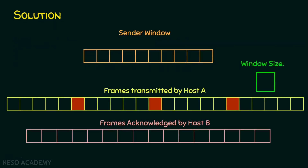I've predefined certain things: there is a sender window showing the window size, the frames transmitted by host A, and the frames acknowledged by host B. Every sixth frame is lost — so frames at position 6, 12, 18, etc. in the transmission sequence will be lost. Whatever is marked as acknowledged means that frame is acknowledged by the receiver, host B, and sender and receiver need not worry about those frames anymore.